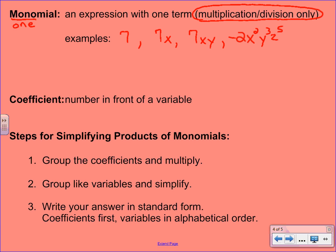The next definition, coefficient, is a definition you should be familiar with. A coefficient is simply the number that's in front of the variable. So if you look at our previous examples, 7x, 7 would be the coefficient. If you look at the last one, negative 2x to the second, y to the third, z to the fifth, negative 2 is the coefficient.